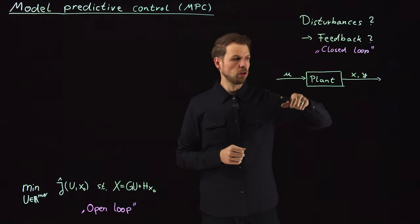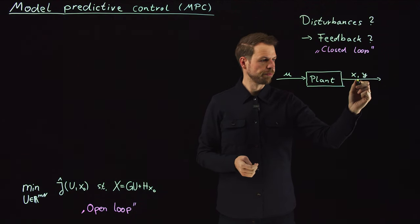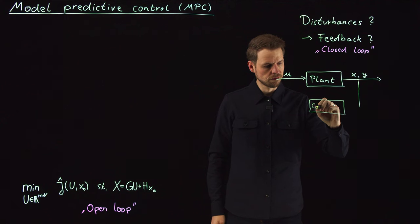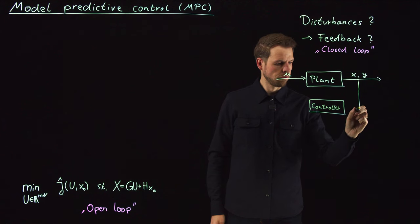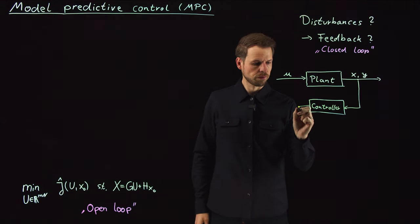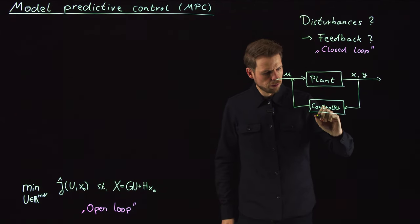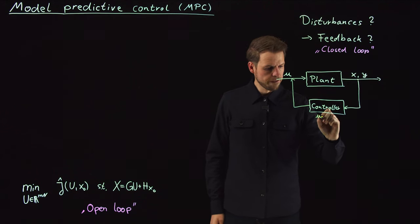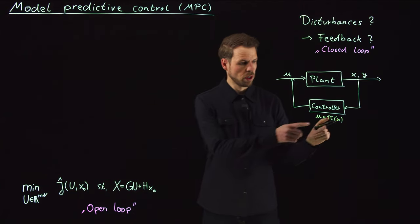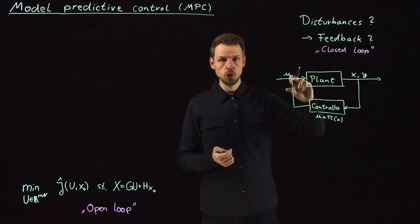And so feedback control or closing this loop means that we have a feedback. So we measure either our observed quantity or the system state itself and then we connect this to a controller. So this controller receives the system state or the measurement and takes a control decision. So we give back some u. And so mathematically speaking, what this could be is that you decide on your control input as a function and this is often called π of x or y. So you have a function that takes in the state and produces a control input.